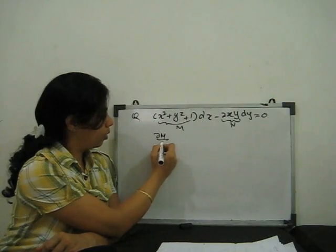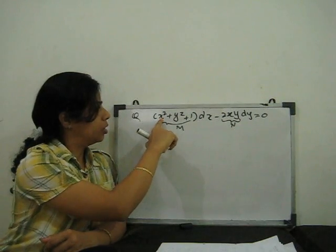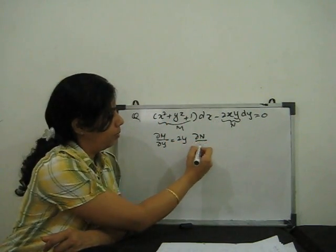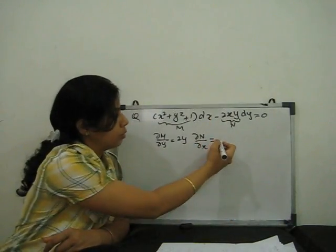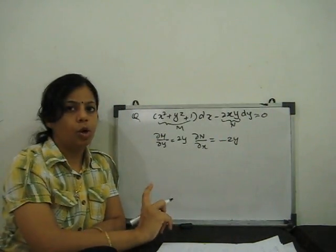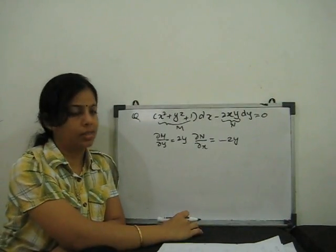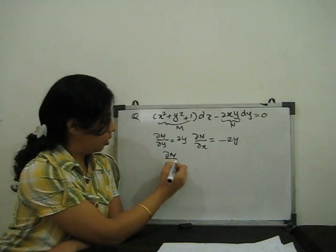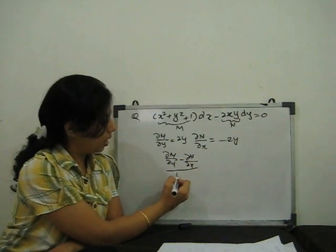We compute ∂M/∂y = 2y, and ∂N/∂x = -2y. Both are not equal, so it is not an exact differential equation. We need to convert it to exact. Using Case 1: (∂M/∂y - ∂N/∂x) divided by N.